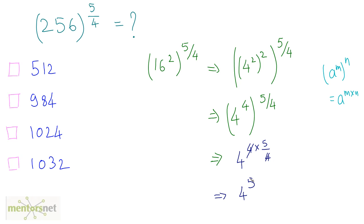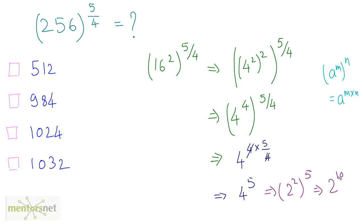4 raised to 5 equals 1024, but let us simplify further. 4 raised to 5 can be written as 2 squared raised to 5, which equals 2 raised to 10. Most people remember the powers of 2, and the 10th power of 2 is 1024.